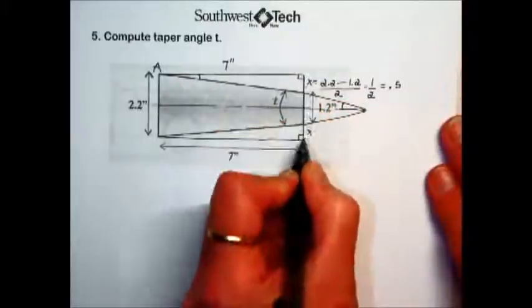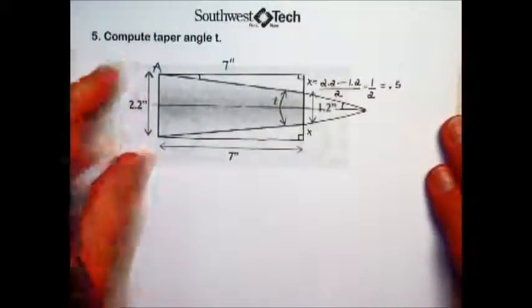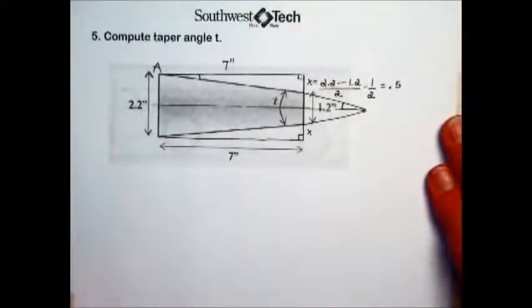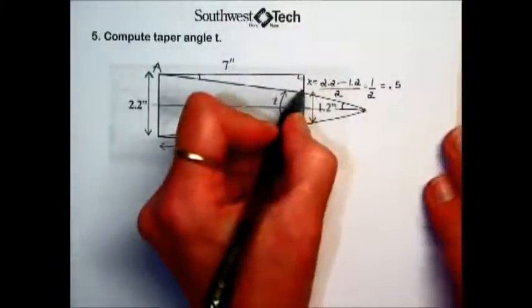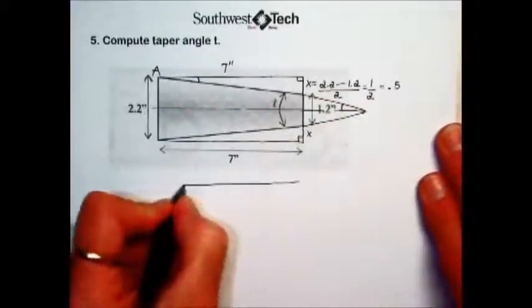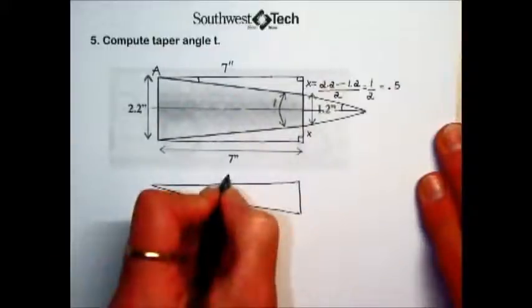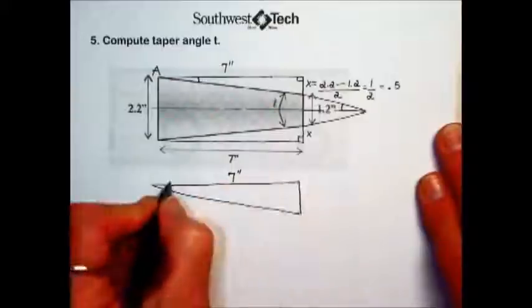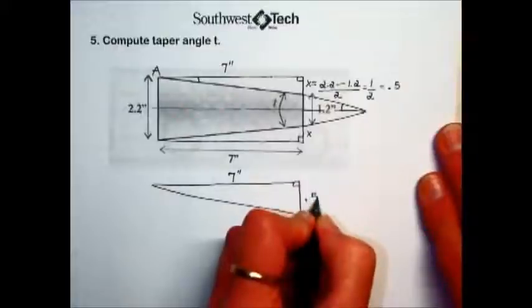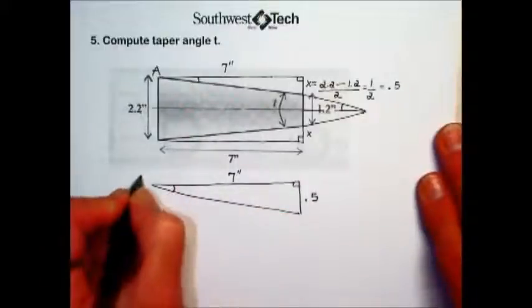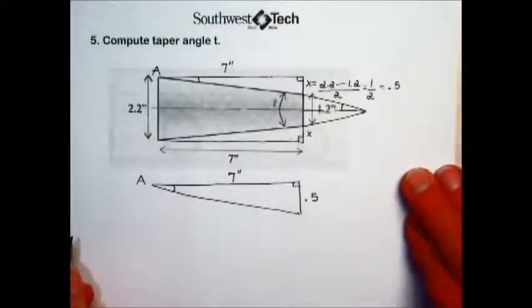So half an inch here, half an inch there would combine to give us the entire width of the widest end of this shaft. Now what I have is a right triangle. And let me draw that right triangle that's at the top here outside and a little bit bigger. We have a length of this side of our right triangle is 7 inches. We just calculated that this side is .5. And what we want to know is what the measurement of that angle is in this right triangle.